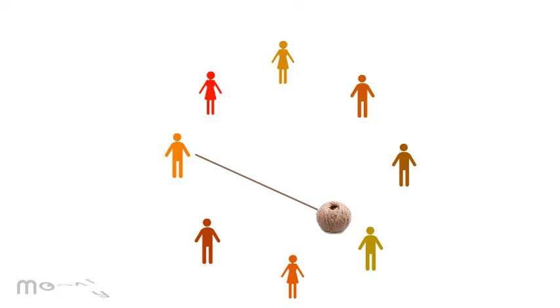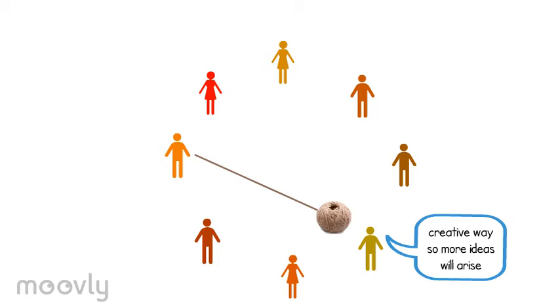The person that received the ball of yarn does the same. In this case Paul says, I would like the team to work in a more creative way so more ideas will arise. The first person I will need to make this happen is Peter. Because he has a big influence on the team and people accept things from him. I have the feeling that if he is more creative other people will follow automatically.